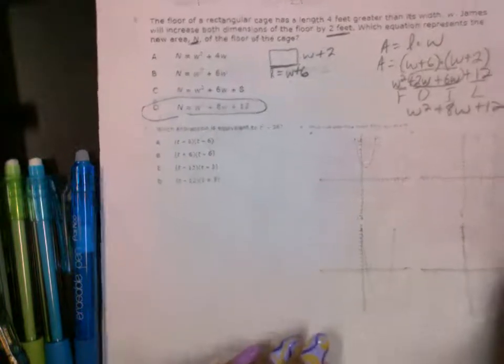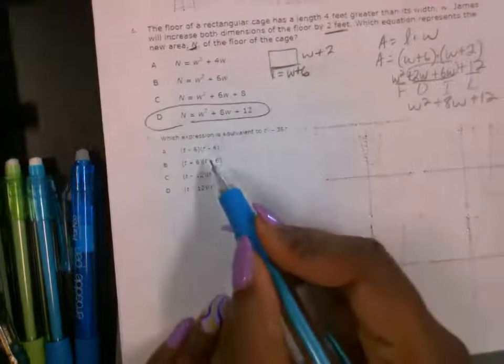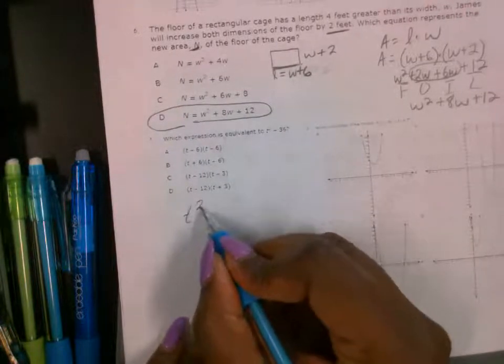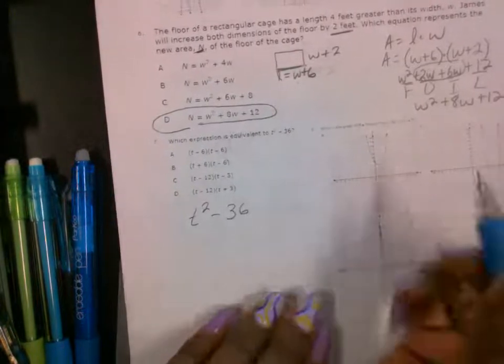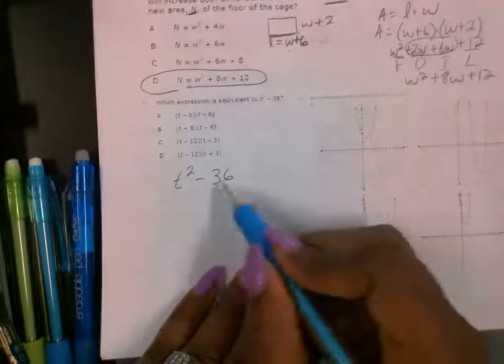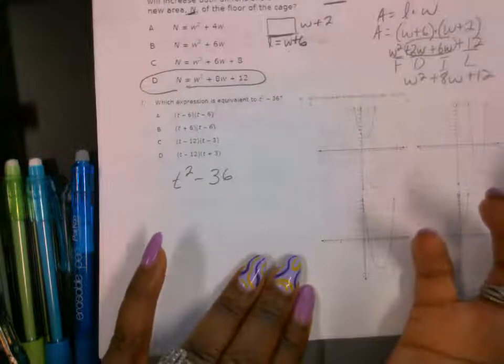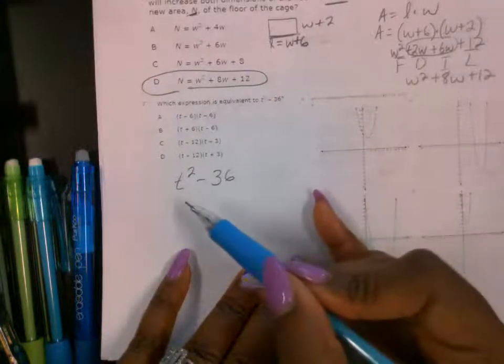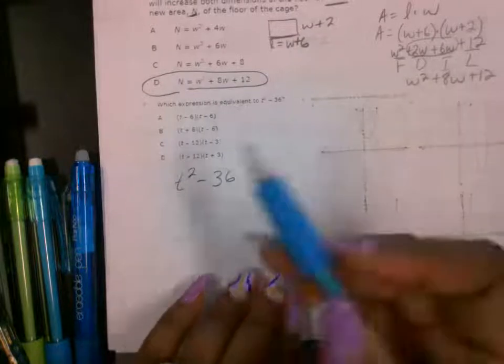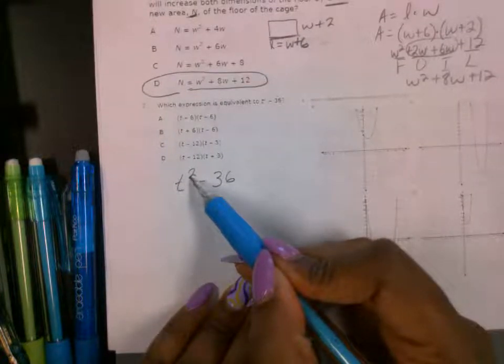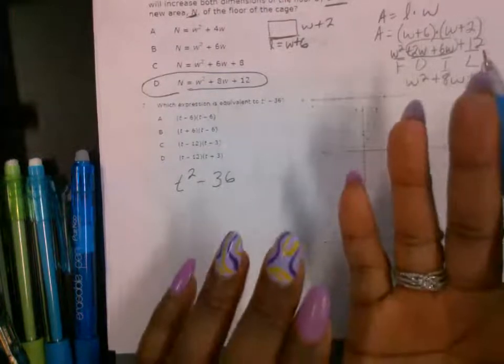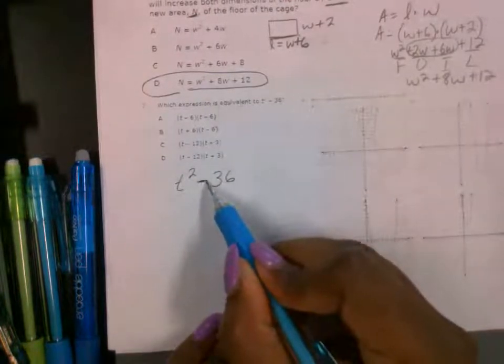Let's look at number 7. So I'm factoring T squared minus 36. Greatest common factor always comes first. There's no greatest common factor between the two. Then what I start to notice is that they're both perfect squares. The square root of T squared is T, and the square root of 36 is 6. And it's difference of squares because it's a minus.